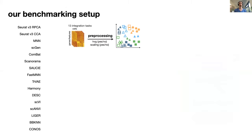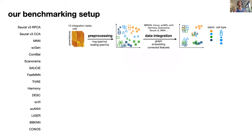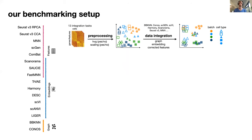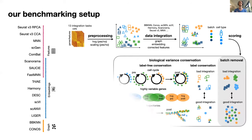So what we did is we set up a benchmarking study with 13 carefully pre-processed or integrated tasks, where we generated gold standard annotations. These come from over 23 different publications and contain over 80 different batches, both RNA and ATAC tasks. We performed variable pre-processing to check what the effects are of taking highly variable genes or scaling the data, and then we applied these 16 different data integration methods. These methods can output either corrected features, joint embeddings, or integrated graphs, and so we designed 14 different metrics.